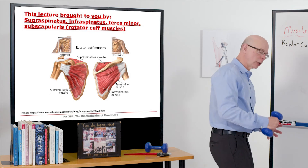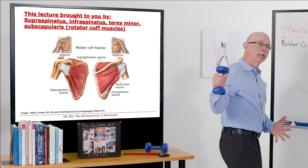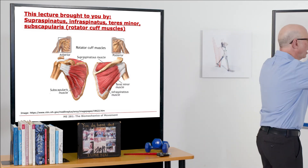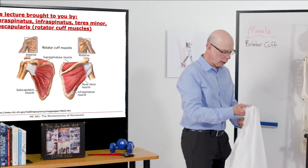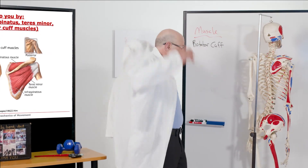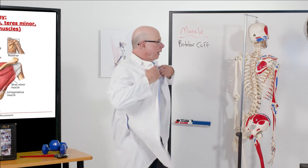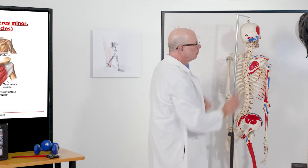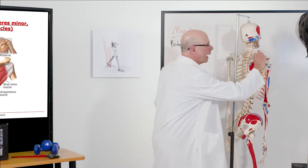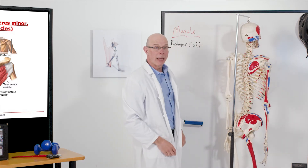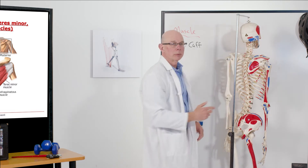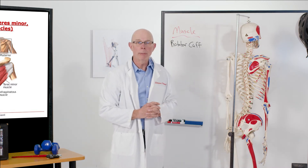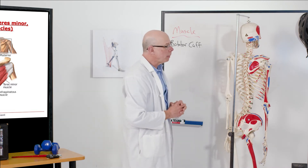Infraspinatus is a muscle involved in external rotation — you use it to externally rotate the shoulder. You can see why these muscles are named the way they are if we look at a skeleton. Looking at the back of the skeleton, we can see the shoulder blades — the scapula. On the scapula there's a scapular spine; above that spine is the supraspinatus muscle, and below is the infraspinatus.